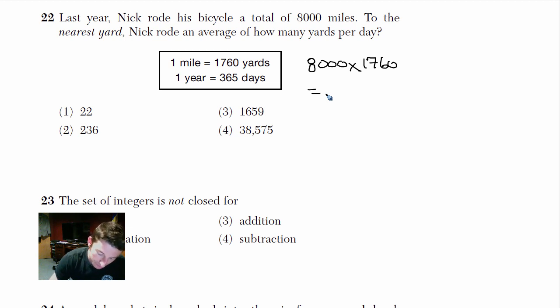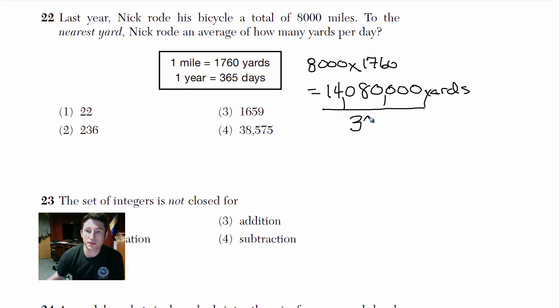I'll just do it on a calculator real quick. 8,000 times 1760. Okay, so we have 1408 with four zeros. That monstrous number is 14 million yards, 14,080,000 yards. So now that was the total amount that he did and they want to know how many per day. We're just going to take that massive number and we're going to divide it by 365 to give us per day.